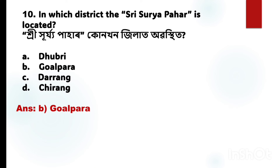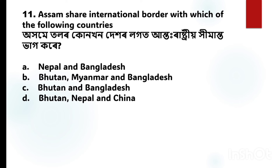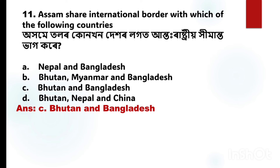Next question number 11: Assam shares an international border with which of the following countries? The correct answer is Option C: Bhutan and Bangladesh.